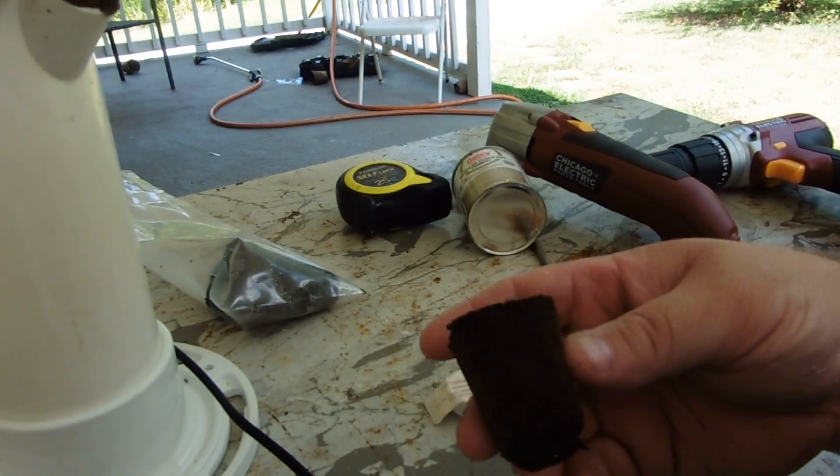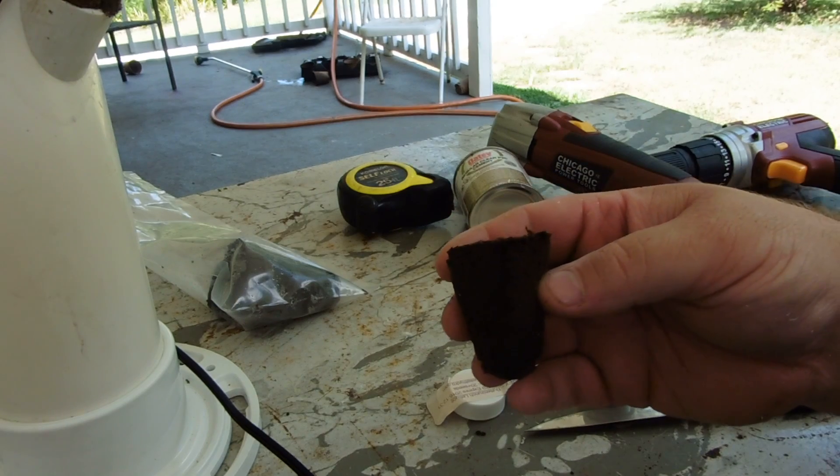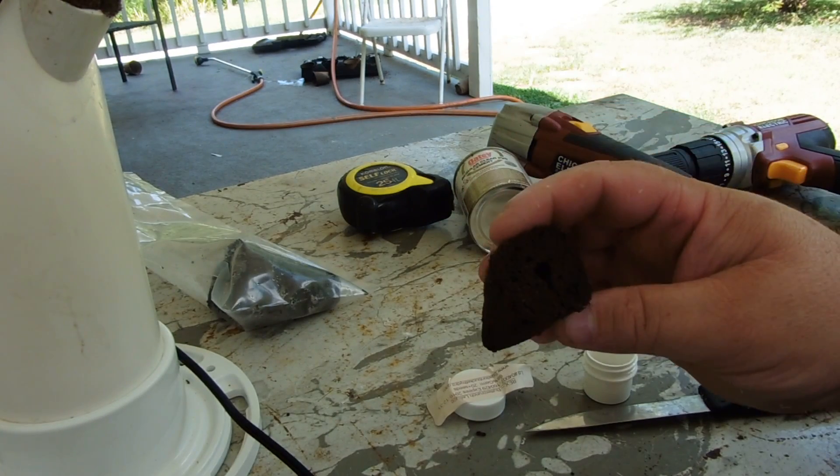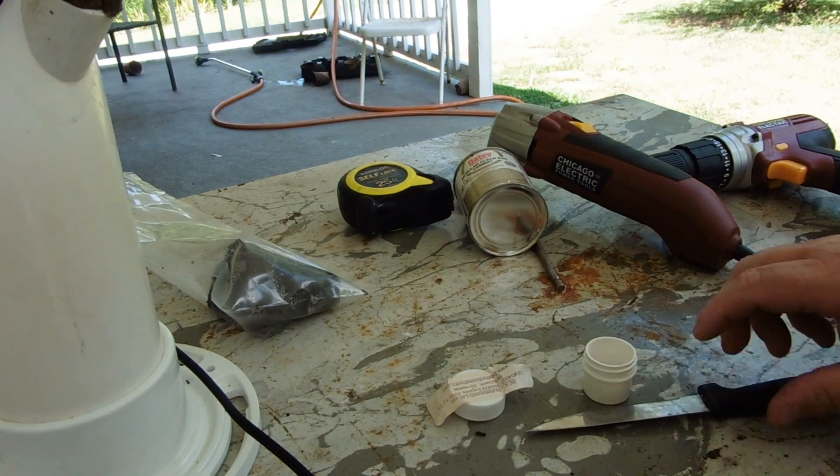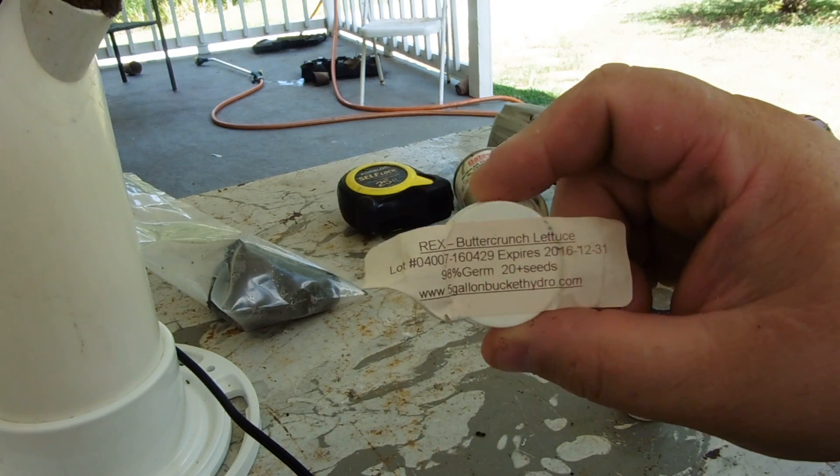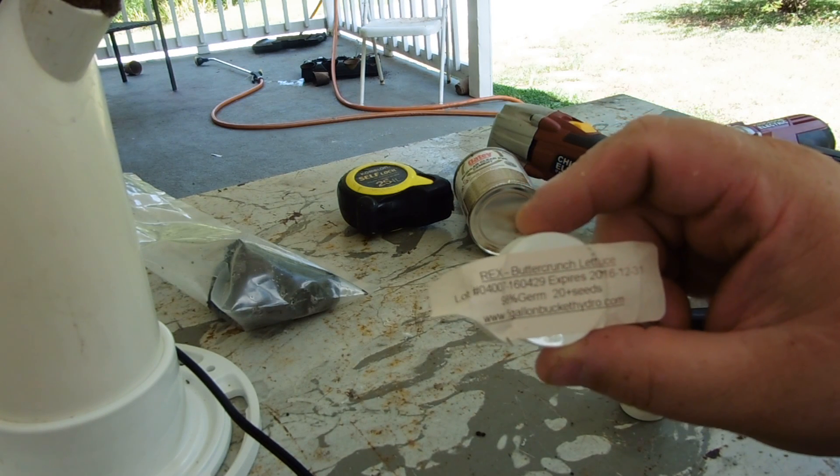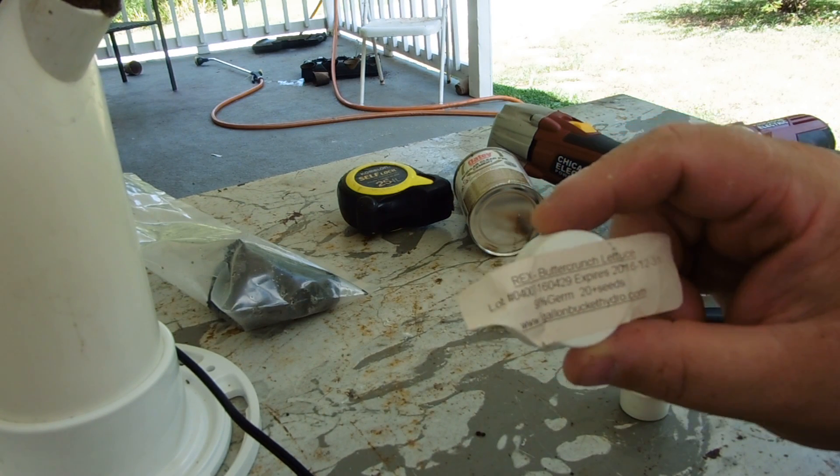Now, here's the grow plugs, the rapid rooters from General Hydroponics. What we're going to do, these seeds are butter crunch lettuce, 98% germ, 20 seeds.